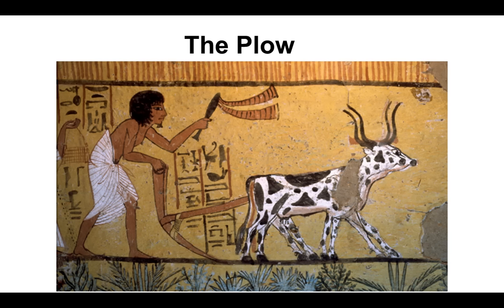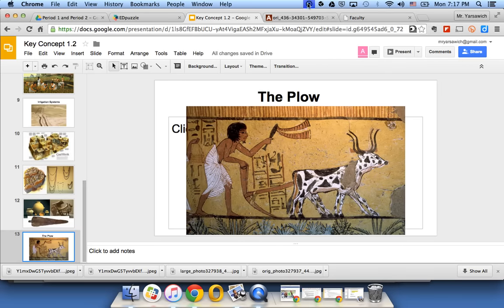As women were no longer productive members of the economy, they really tended to lose social status. This creates a social structure called patriarchy - a society in which men have power over women. In many of these societies, women became hardly valued more than the beasts of burden. We're going to see some extreme examples of that when we look at the first civilizations in Key Concept 1.3. See you then.